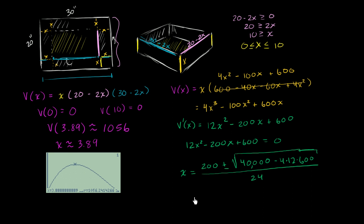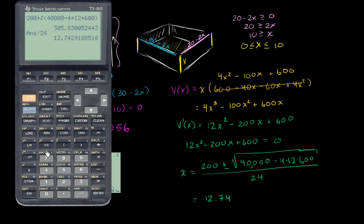So one of my possible x's equals 12.74. And now let me do the situation where I subtract what I had in the radical sign.